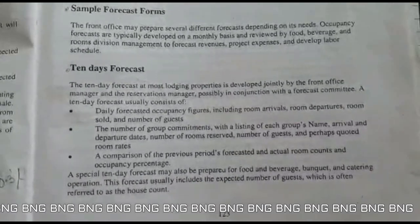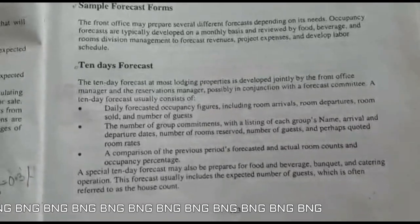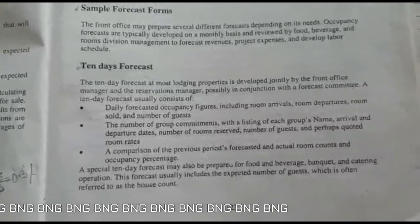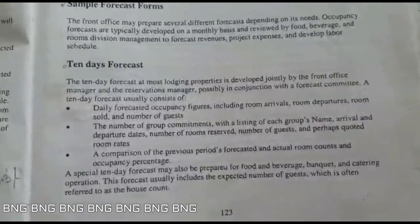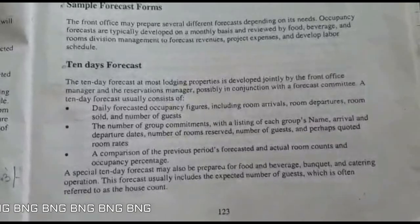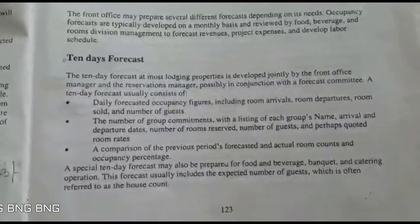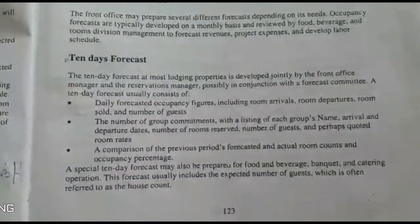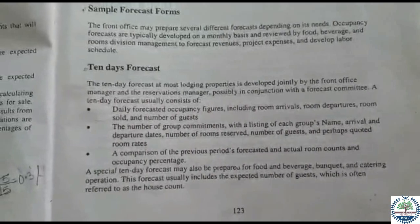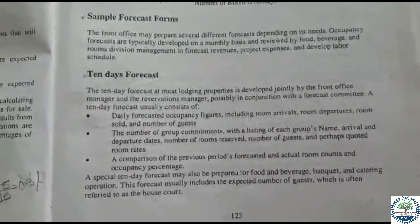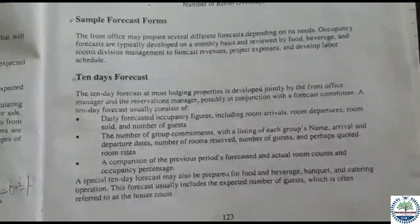Details like number of rooms reserved, names of guests, number of guests, and quoted room rates are shared — needed for housekeeping if specific amenities are to be placed, or for the F&B team regarding packages, whether breakfast is included, and what food and beverage items are supposed to be placed in the room. Also, a comparison of the previous period's forecasted and actual room counts and occupancy percentage. A special 10-day forecast must also be prepared for food and beverage, banquet, and catering operations to understand the expected number of guests and ensure proper manpower for the shift.